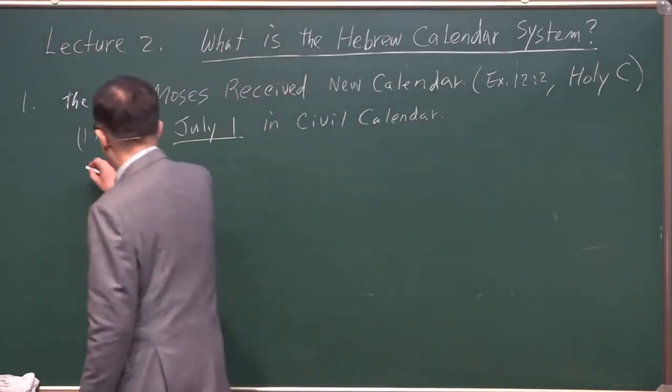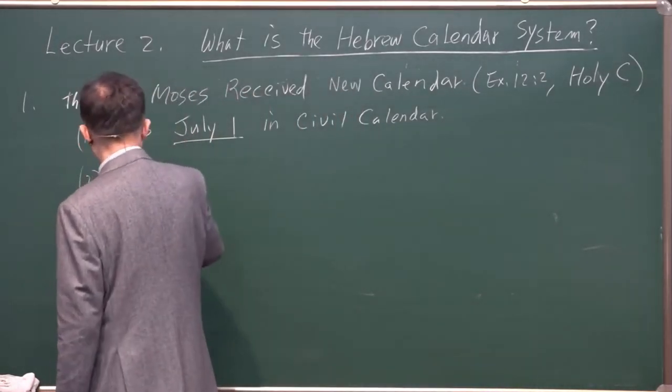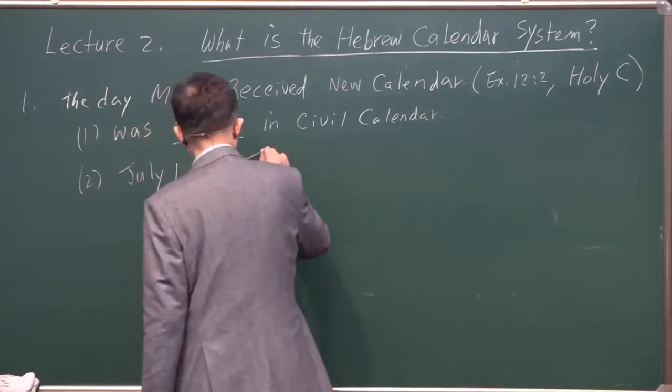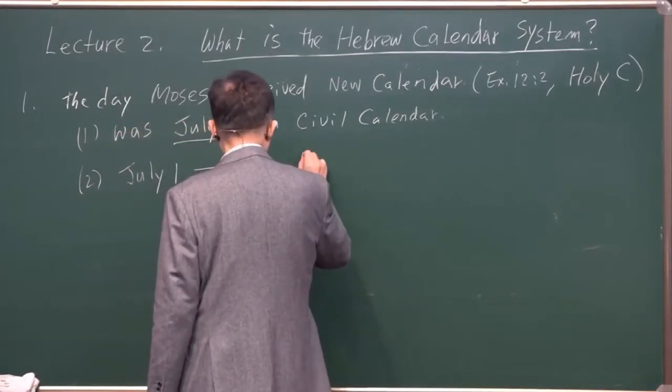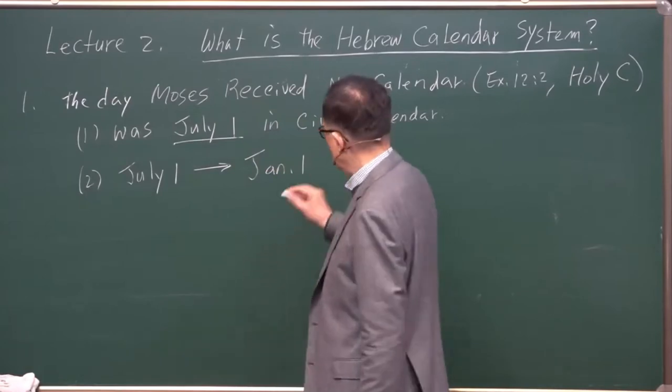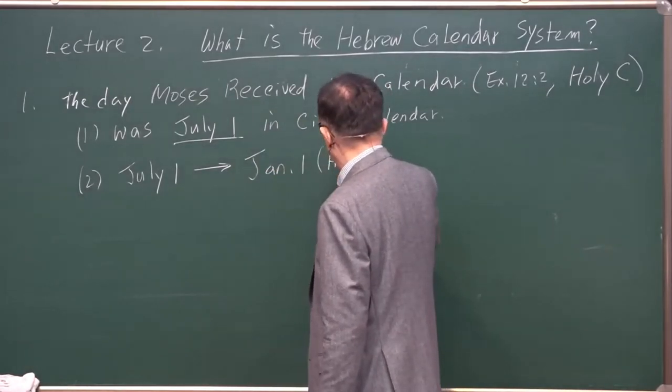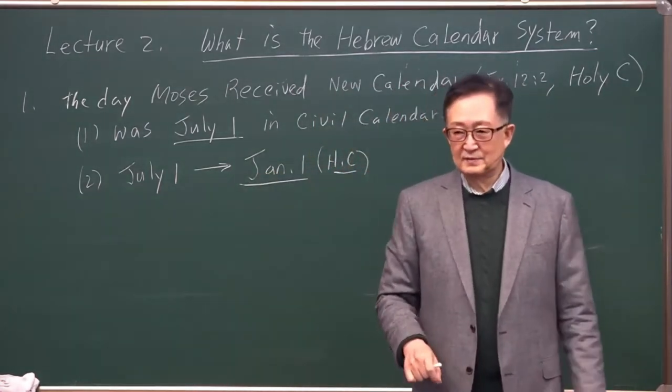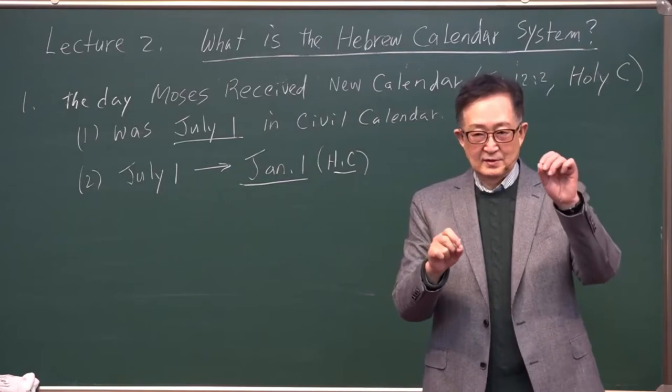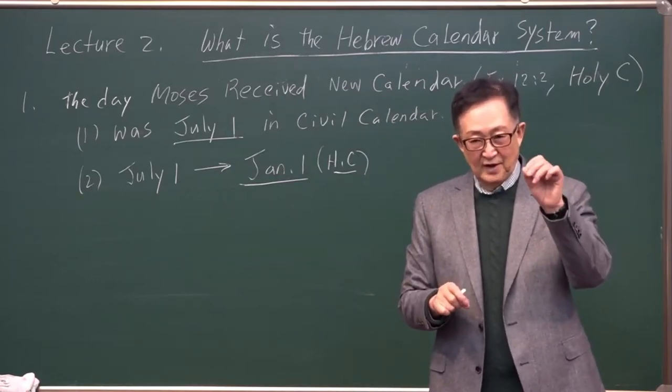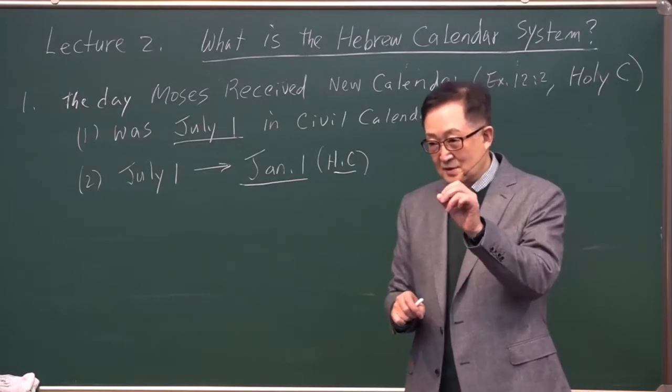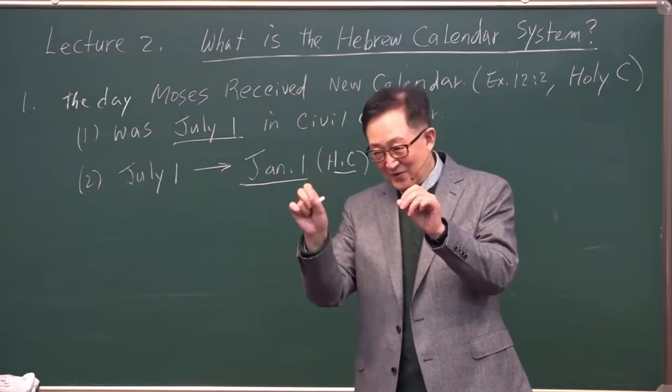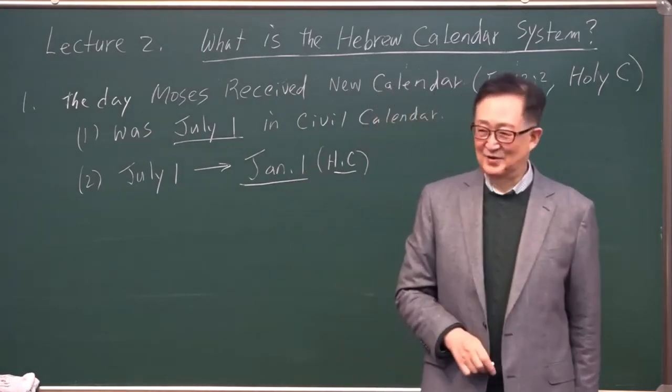So now here, make July 1 to January 1. That is the Holy calendar. In other words, the Civil calendar July 1 is a new calendar. July 1 equals what? January, Holy calendar, January 1. Don't forget that.